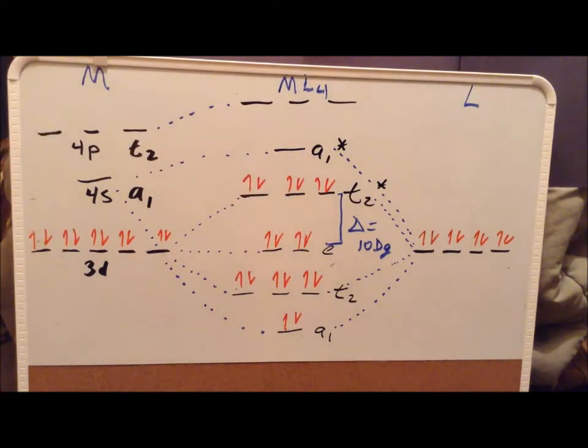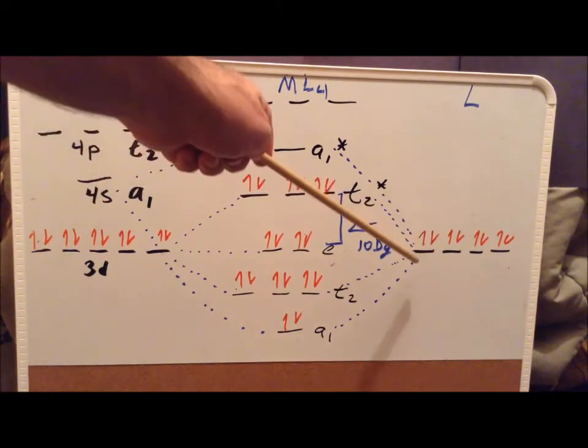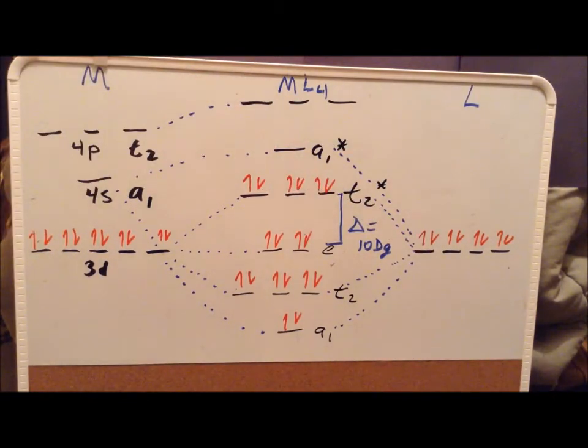We'll notice a similar situation occurs with the octahedral case. Now, another interesting thing that we see is if we have a D10 metal and we have the four ligands, so they contribute the eight electrons, that gives us a total of 18 electrons.